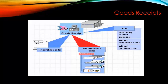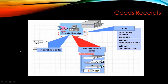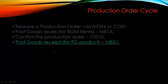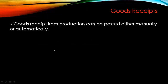Goods Receipts are done for production orders as well as purchase orders. In SAP MM, MIGO is one of the most important transactions for Goods Receipt of a purchase order. For production orders, we can use MIGO as well, or other transactions like MB31. Goods Receipt from production can be posted either manually or automatically.